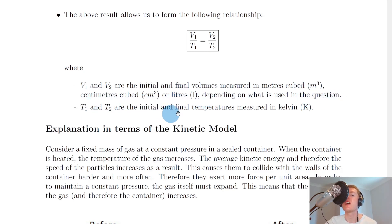And T1 and T2 are the initial and final temperatures measured in Kelvin. So this equation only holds when temperature is measured in Kelvin, not in degrees Celsius. Because remember, this equation has been formed using the relationship that V is proportional to T.